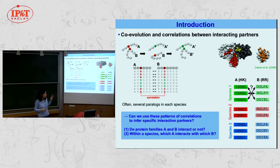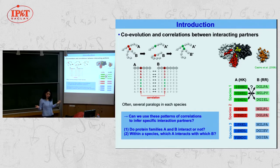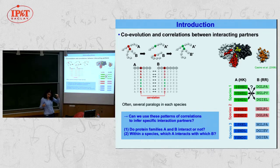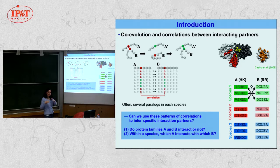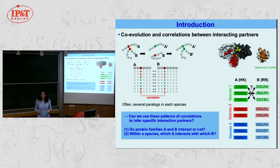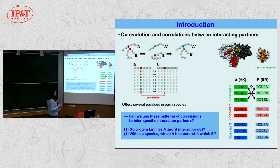We can ask the inverse problem: can we employ the patterns of correlations to infer which proteins interact together? I ask two questions. First, if I take two protein families A and B, can we say whether A and B interact together or not? Second, if I already know that A and B interact in some species, can I find specifically in each species which A interacts with which B? This arises because in each species there are often multiple copies of A and B, slightly different, and to understand pathways, we need to know which particular A interacts with which particular B.